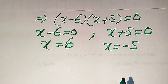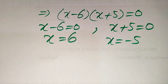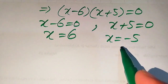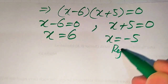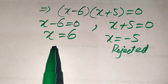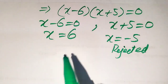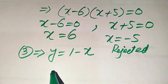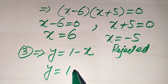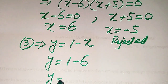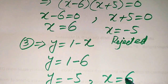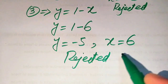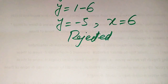Since we are solving for positive integer values of k, and we find x = −5 is negative, we reject that result. For x = 6, substituting into equation 3 gives y = 1 − 6 = −5. Since y is also negative, we reject this entire Case 1 and proceed to Case 2 only.